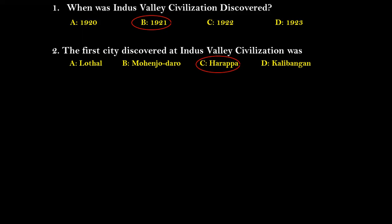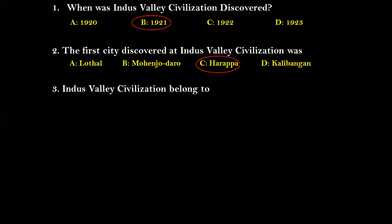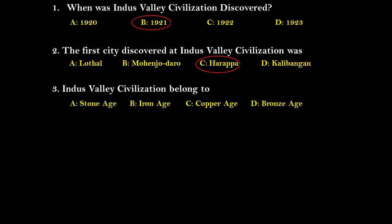Question three: Indus Valley Civilization belongs to which age? Options are Stone Age, Iron Age, Copper Age, and Bronze Age. The right answer is Bronze Age. The Indus Valley Civilization came after the Copper Age — after the Neolithic Age came the Copper Age, and then people started using copper with tin, leading to the Bronze Age.